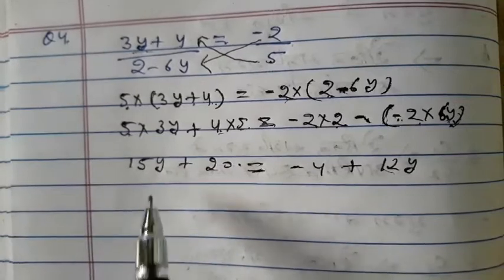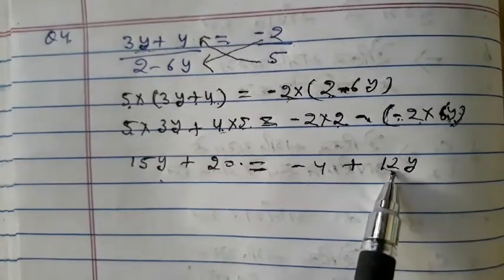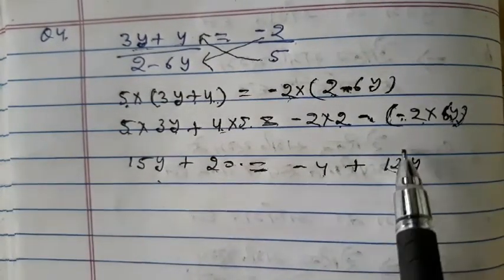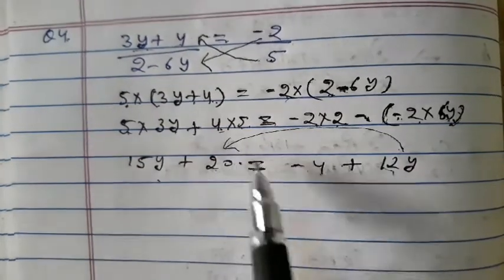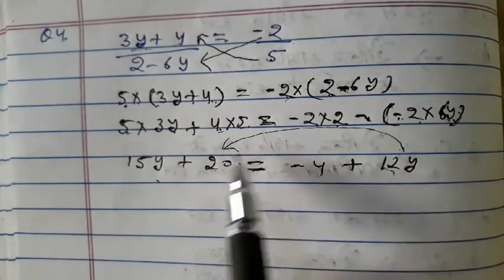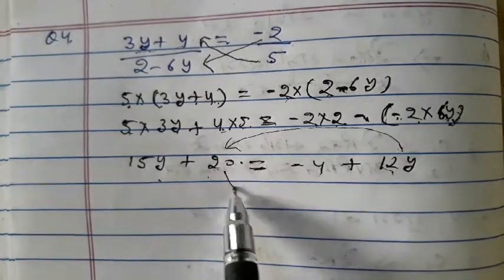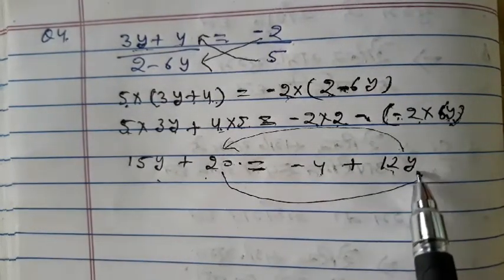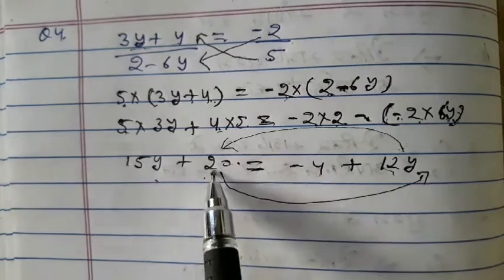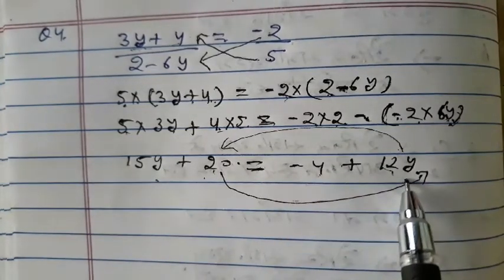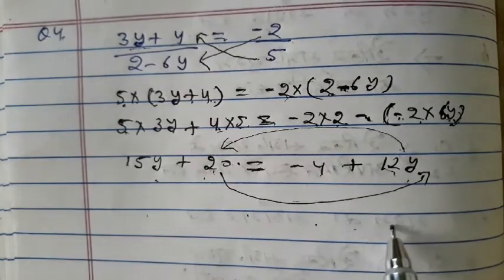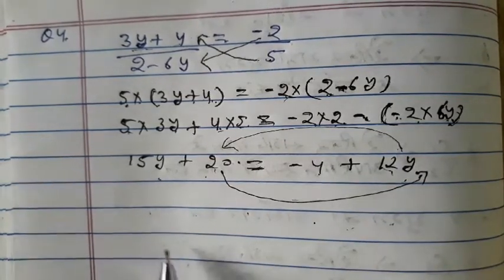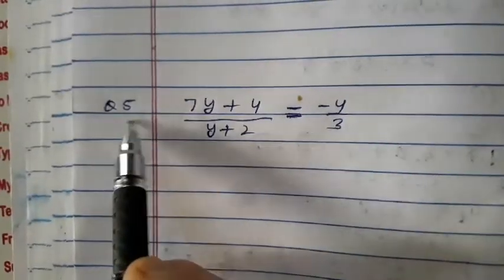Now 15y and 12y are the variable terms; 20 and minus 4 are the constants. Transpose 12y to the left side — it becomes minus 12y. Transpose 20 to the right side — it becomes minus 20. So 15y minus 12y equals minus 4 minus 20. Now after this, do it yourself.